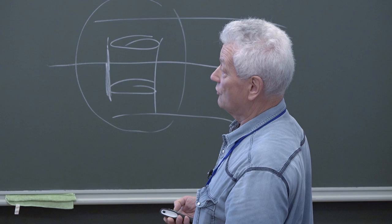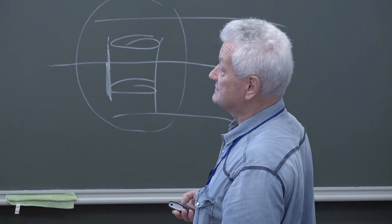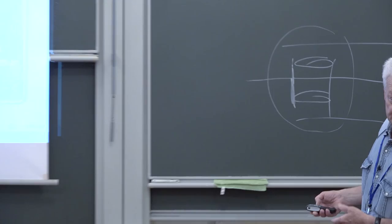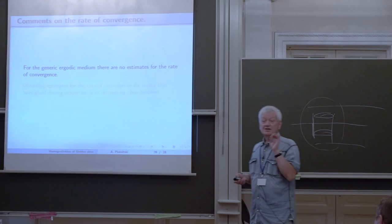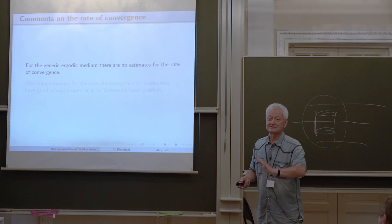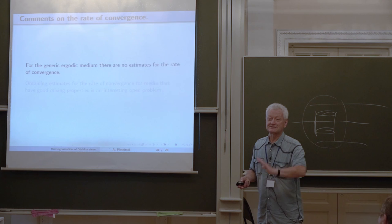The theorem is basically the same as in the periodic case: we have convergence of the spectrum, lambda j epsilon converges for each j, eigenfunctions corresponding to simple eigenvalues of the limit problem converge in L2, and we have convergence of eigenspaces. However, for generic random media there is no way to have a rate of convergence, because ergodicity is a qualitative property — Birkhoff's theorem only states convergence, never giving the rate.